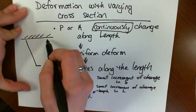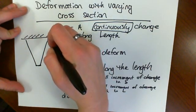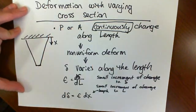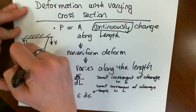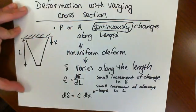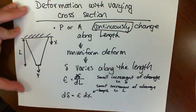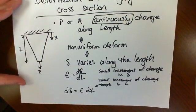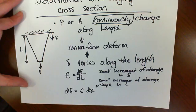So this would look something like this. We are defining this to be our x direction, and it's varying over the entire length. We're applying a load here. The load is constant, but the cross-sectional area is not constant over the length.